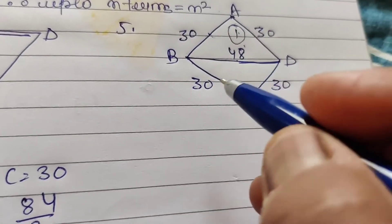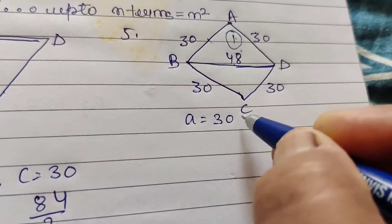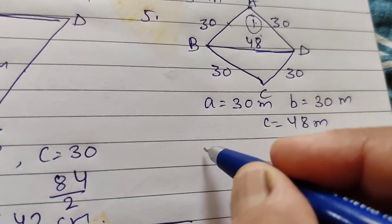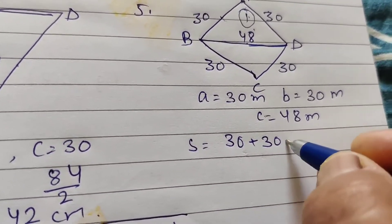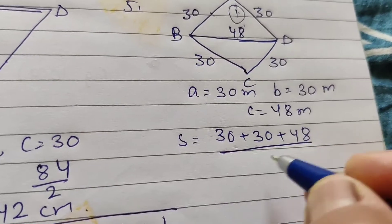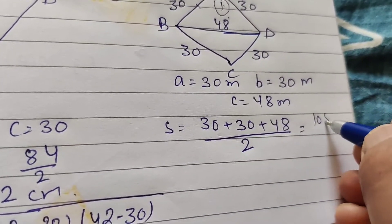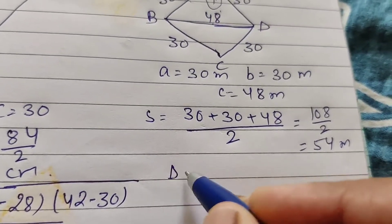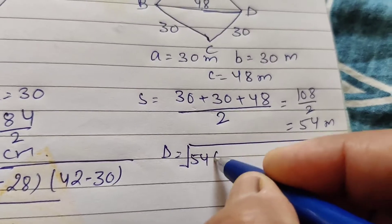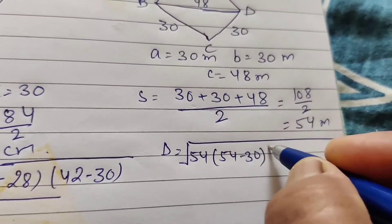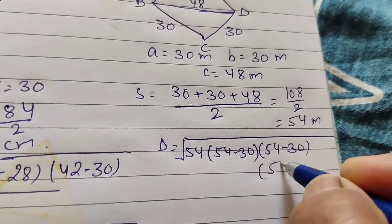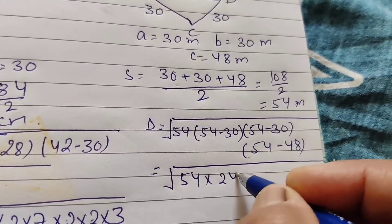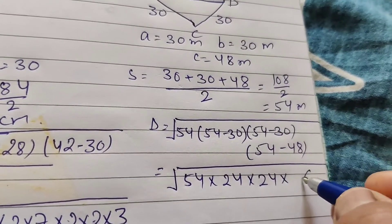For area of triangle ABD: A equals 30 meter, B equals 30 meter, and C equals 48 meter. S equals (30 plus 30 plus 48) by 2, which is 108 by 2 equals 54 meter. Area equals under root of 54 into 24 into 24 into 6.